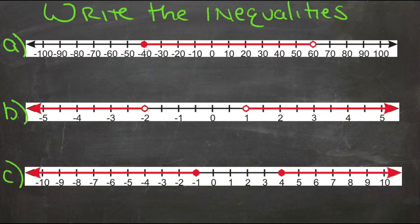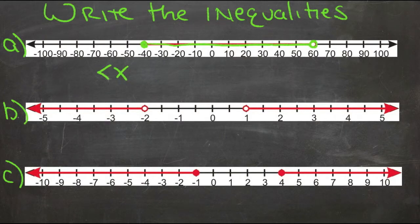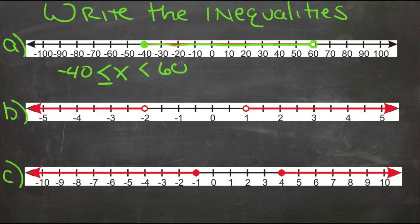When we're using inequalities on a number line, we're graphing what the variable can be. In this first example, the variable X can be negative 40 or less than 60 — it can't actually be 60 — or any of the numbers in between. So X is greater than or equal to negative 40 but less than 60.